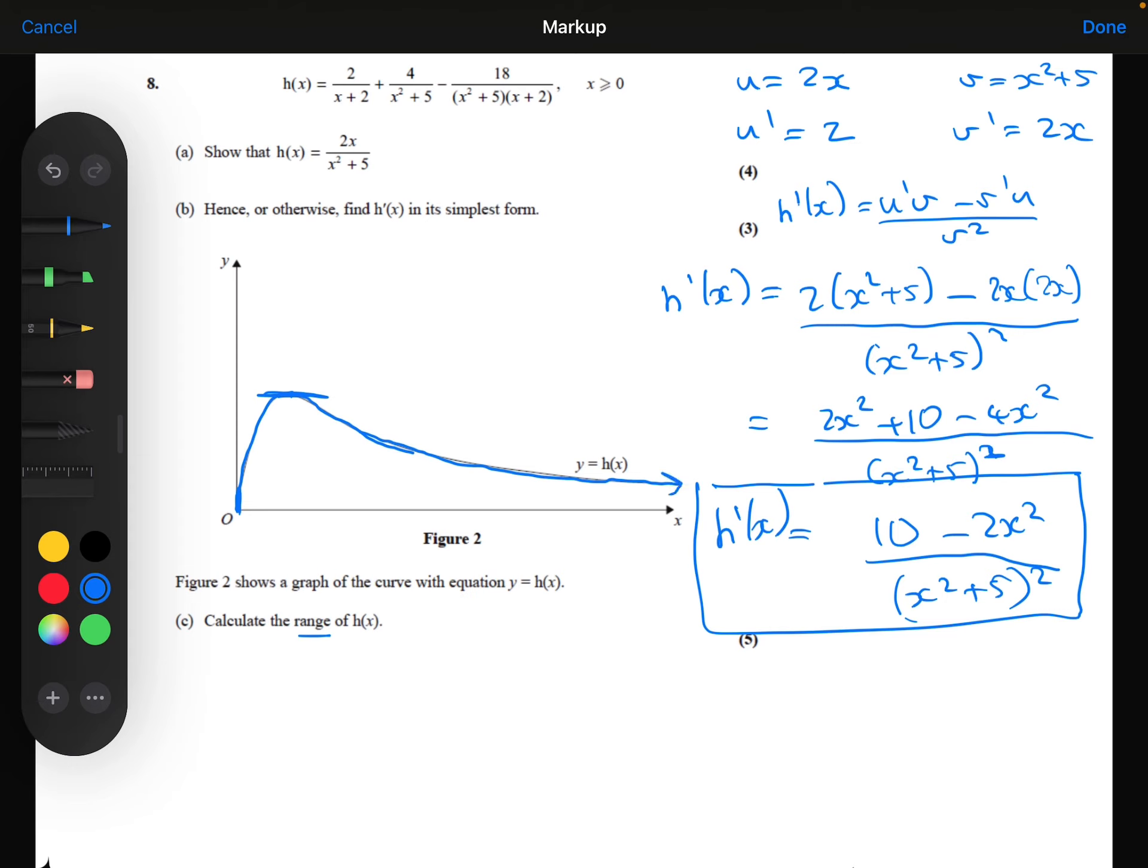So I can see that its smallest y value is 0 here. And its biggest y value is whatever that y value there is. So straight away I can say that h of x has to be greater than or equal to 0 from the lower value, and less than or equal to the upper value. I'm not quite sure what the upper value is yet at the moment though.